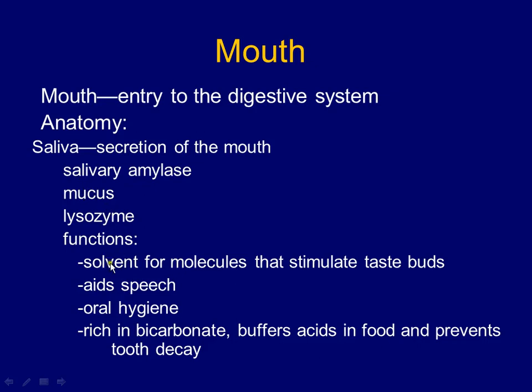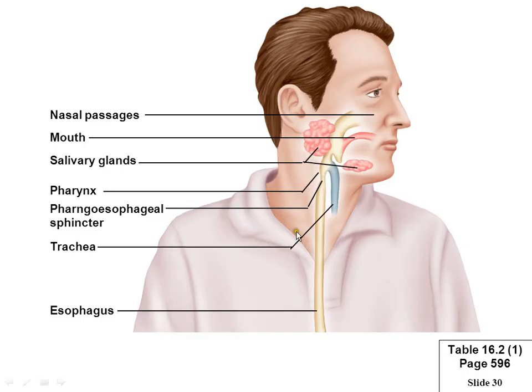Saliva functions as a solvent to help digest, dilute, and liquefy food. It aids in speech, oral hygiene, and is rich in bicarbonate. Bicarbonate is an alkaline substance that neutralizes acids in your mouth — when bacteria break down food remnants and create acid, bicarbonate helps prevent tooth decay. You have three major salivary glands, including the sublingual ones underneath the tongue.